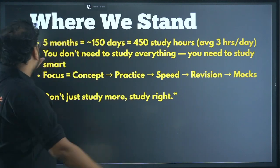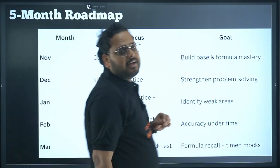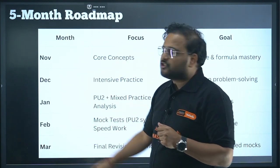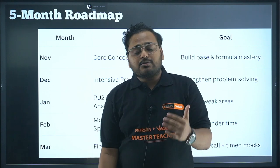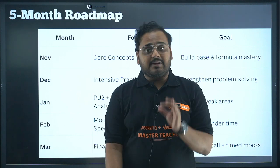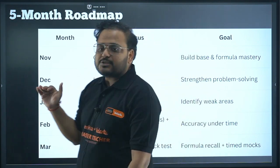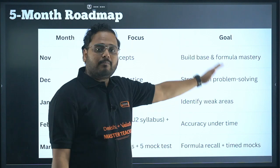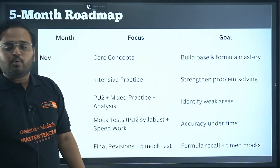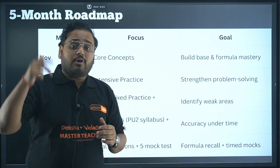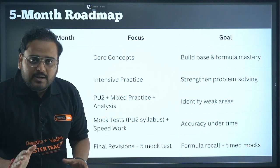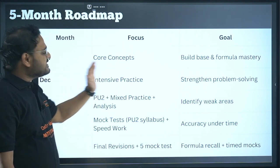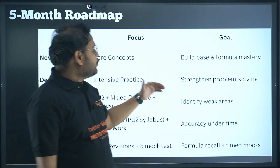Here is your five-month roadmap, from November to March, with some time in April as well since you'll lose days to your board exams in March. Starting November, the first thing is core concept building. The goal will be to build base and formula mastery — all chapters in your syllabus, PU1 and PU2. You cannot forget the formulas; you need to solve questions in less than 60 seconds.